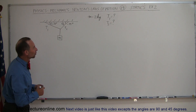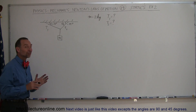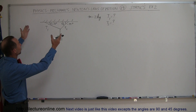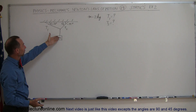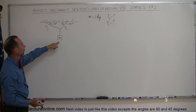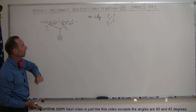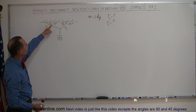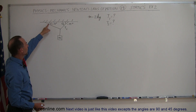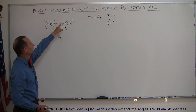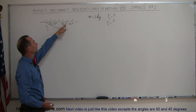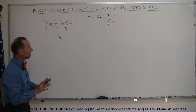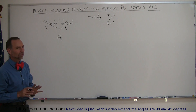Here we have a statics problem where the angles are not the same. There are two strings attached to the ceiling. They come together, and from that point a mass is suspended. The mass has a mass of 2 kilograms. The angle between the ceiling and the first string is 30 degrees, and the angle between the second string and the ceiling is 45 degrees. What are the tensions in those strings?